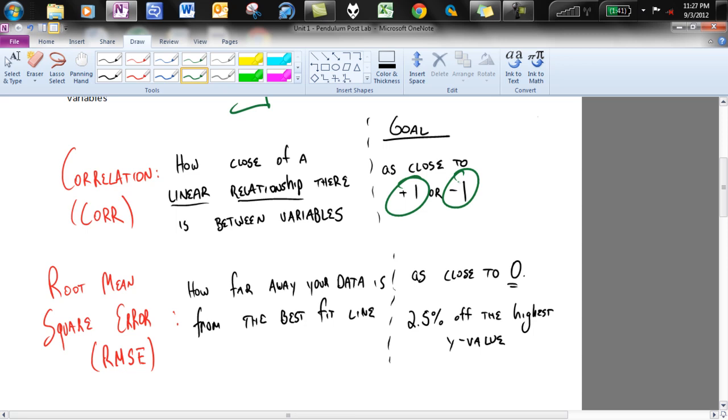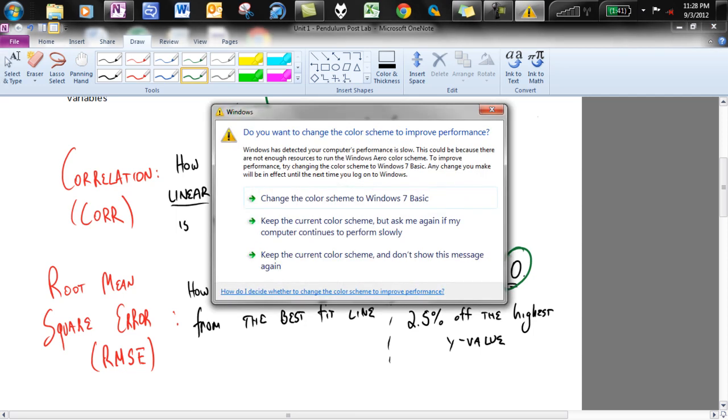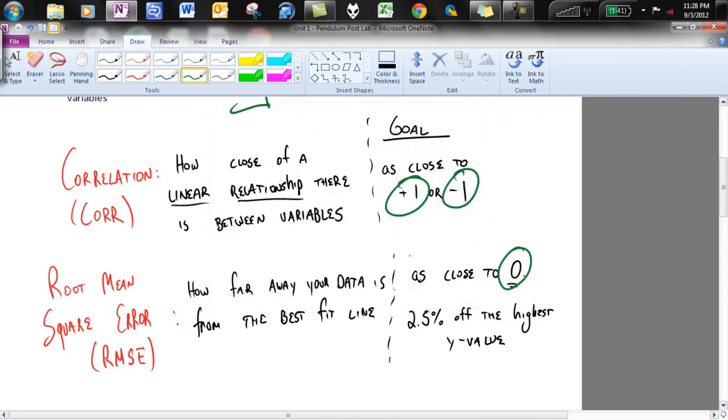Root mean square error is going to be how far away the data is from your best fit line. Of course, your goal in this case is going to be 0. You don't want any, you want all your points on the best fit line. However, we do give ourselves about 2.5% of the highest value for that to happen. So that means you take your highest y value, you take 2.5% of that, and you hope that your root mean square error is less than that.